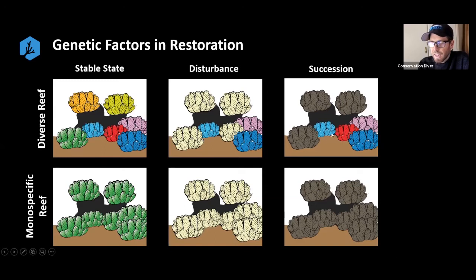If we have this monospecific reef created from fragments — cloning all these corals — yeah, it looks like an abundant reef. But when we get a disturbance that that particular genetic material can't deal with, the entire reef goes away.